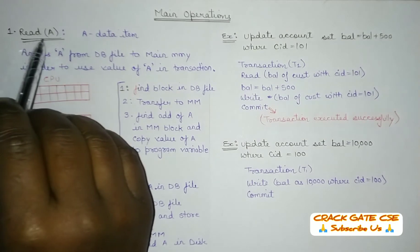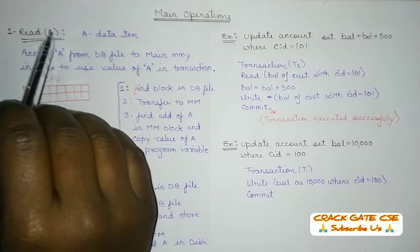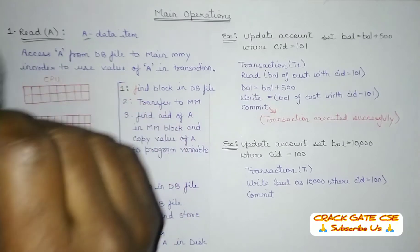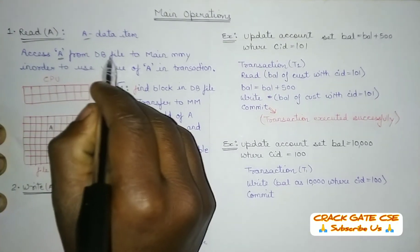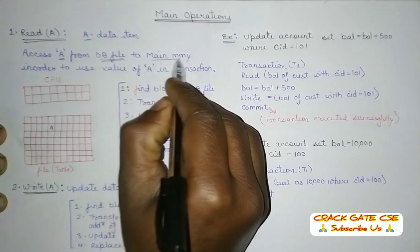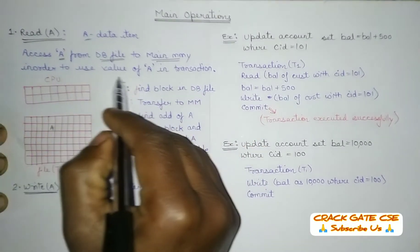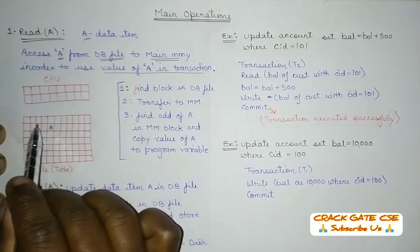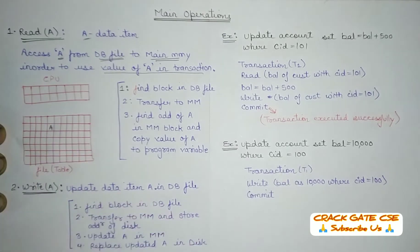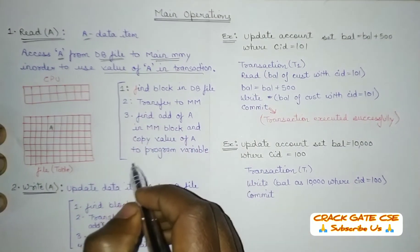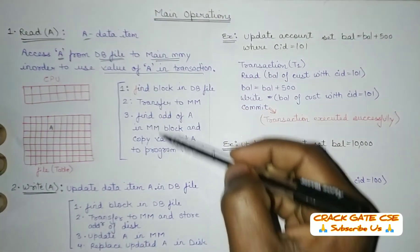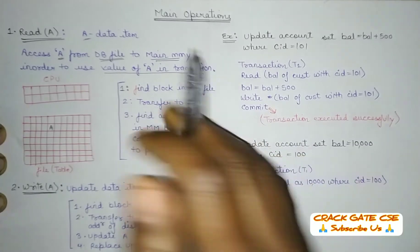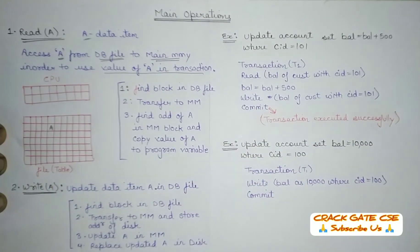The first operation is read. Read(A) means we have to read the data item A. A is nothing but a data item stored in the database file. We have to access A from the database file and copy it to main memory so we can use the value of A in our transaction. Although read has sub-instructions, it is treated as one atomic instruction — meaning all sub-steps are collectively treated as a single instruction.